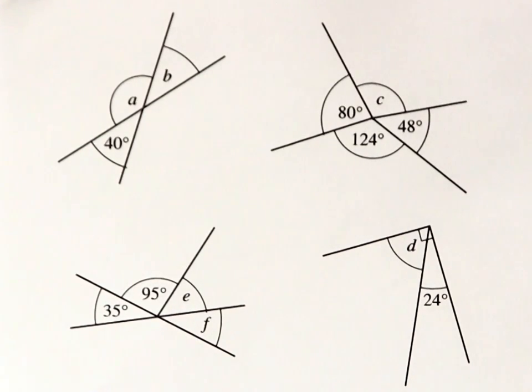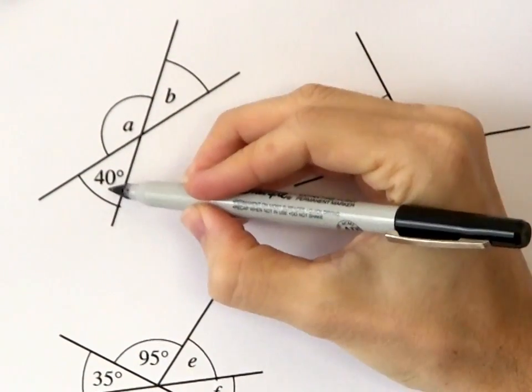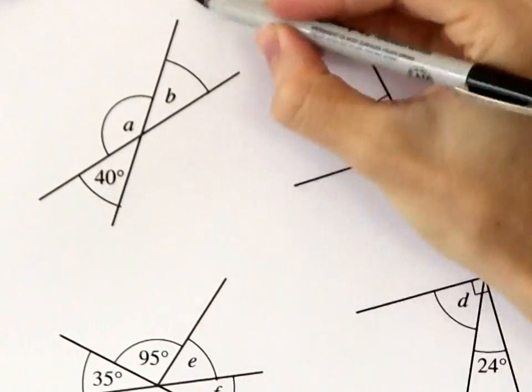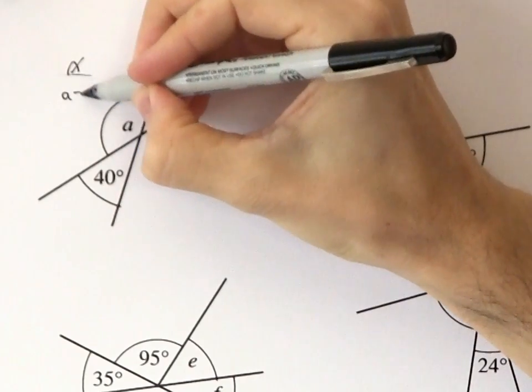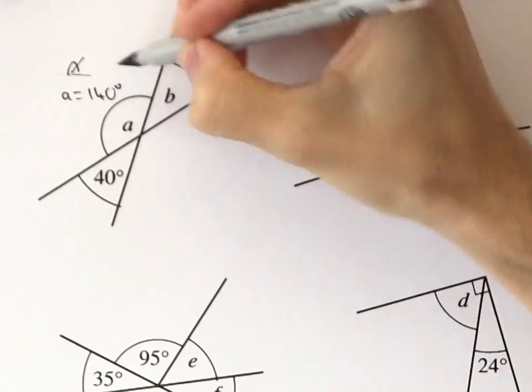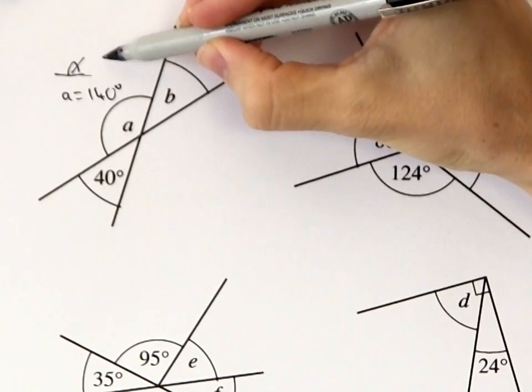Let's try using those rules to solve some simple geometric problems. Angle A and 40 degrees are on a straight line, so they must add up to 180 degrees. So A must be 140 degrees.